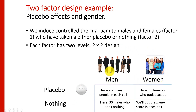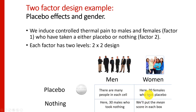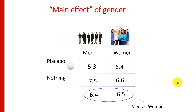We've crossed the factor of gender — men or women — with the factor of placebo: whether you got the placebo pill or you got nothing. Hypothetically we'd have 30 people in each cell: 30 males who took nothing, 30 males who had the placebo, 30 women who had the placebo, and 30 females who took nothing. To simplify, we're going to show just the mean of each group. So here's the mean of men who had placebo, mean of women who had the placebo, mean of men who had nothing, and the mean of women who had nothing.